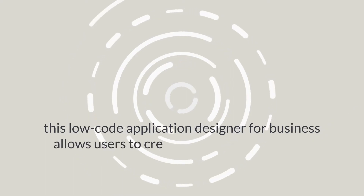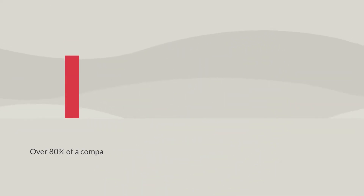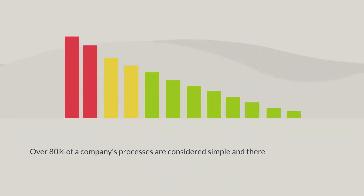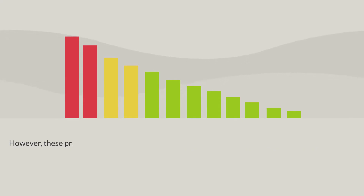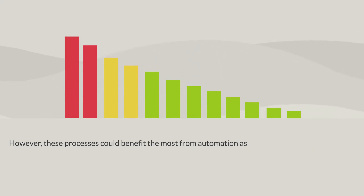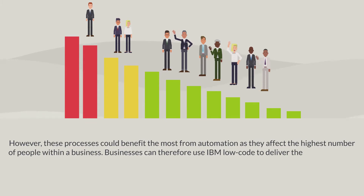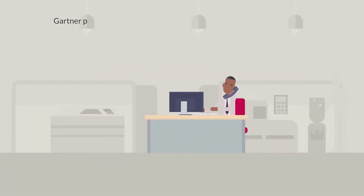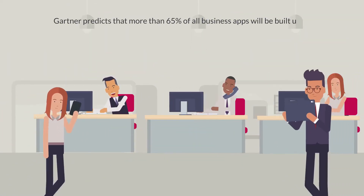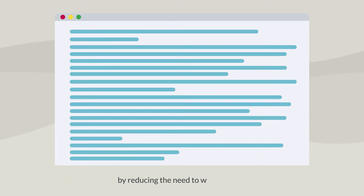IBM Business Automation Application Designer is a game changer. This low-code application designer for business allows users to create business applications that use the platform's capabilities. Over 80% of a company's processes are considered simple and therefore not suitable for the investment required for automation. However, these processes could benefit the most from automation as they affect the highest number of people within a business. Gartner predicts that more than 65% of all business apps will be built using low-code by 2024. Low-code development is a way to build software applications faster by reducing the need to write code.